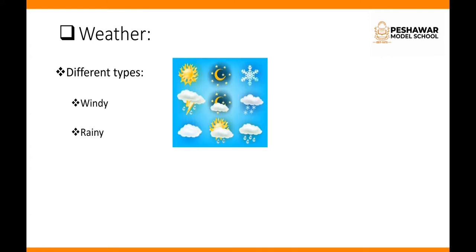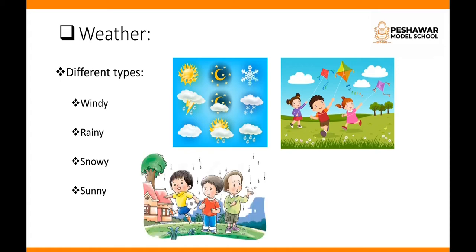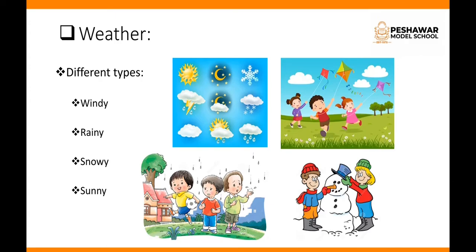The different kinds of weather are windy, rainy, snowy, and sunny. Here we have some activities which we enjoy during that time. For example, flying a kite when it's windy, playing in the rain on a rainy day, and making a snowman after a snowfall.